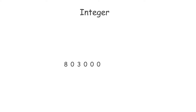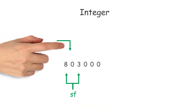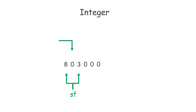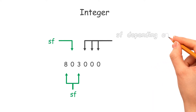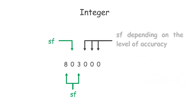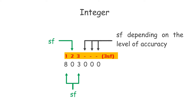Determine the number of significant figures of an integer. Let's say there is an integer 803,000. Applying the first point, all non-zero digits are significant. Applying the second point, the zero between non-zero digits is significant. Then apply the third point — the zero at the end of an integer is significant according to the level of accuracy. Therefore, 803,000 can be three, four, five, or six significant figures depending on the level of accuracy.